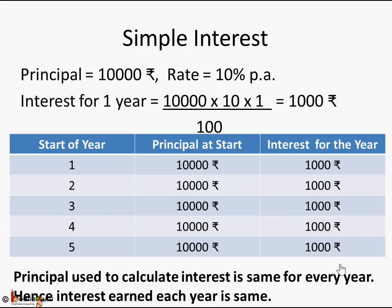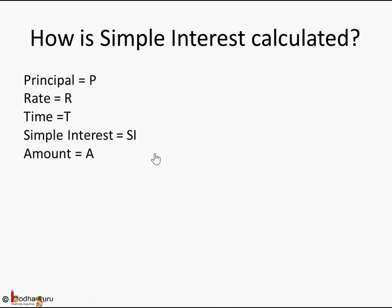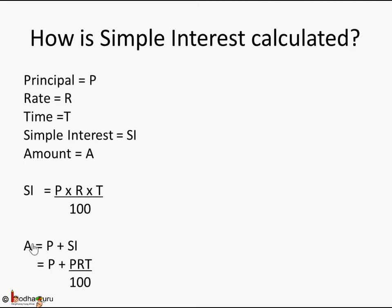The principal remains the same for every year in simple interest, hence the interest remains the same every year. Assuming principal is P, rate of interest is R, and time is T, simple interest SI equals principal into rate into time by 100. The amount A is equal to principal plus simple interest, which is P plus PRT by 100.